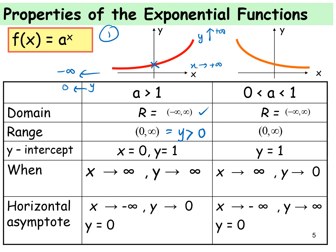When the base is between 0 and 1, the domain is still all real numbers from negative infinity to infinity. The range is y > 0. The y-intercept is still at (0, 1). However, as x goes to positive infinity, y approaches 0, and as x goes to negative infinity, y approaches positive infinity. The horizontal asymptote is still y = 0.